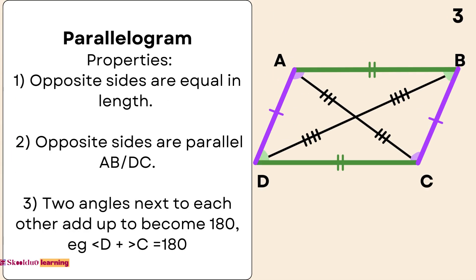Parallelogram Properties. One: Opposite sides are equal in length. Two: Opposite sides are parallel (AB parallel to DC). Three: Two angles next to each other add up to 180 degrees. Example: D plus C equals 180.